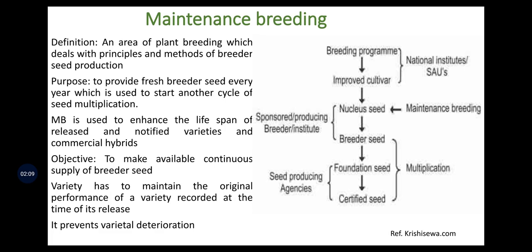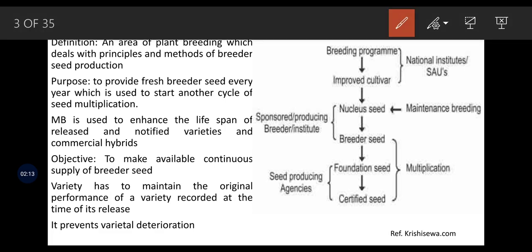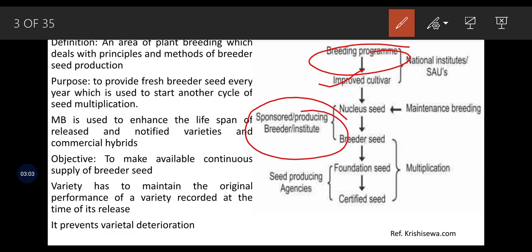The third activity is varietal maintenance, which deals with continuous and fresh supply annually of seeds — especially the breeder seed, and also nucleus seed — which is used to start another cycle of seed multiplication. In the maintenance breeding cycle, whenever a breeding program is undertaken, the outcome will be an improved cultivar. This activity is undertaken by national institutes or state agricultural universities, and the improved cultivar may be the nucleus seed.